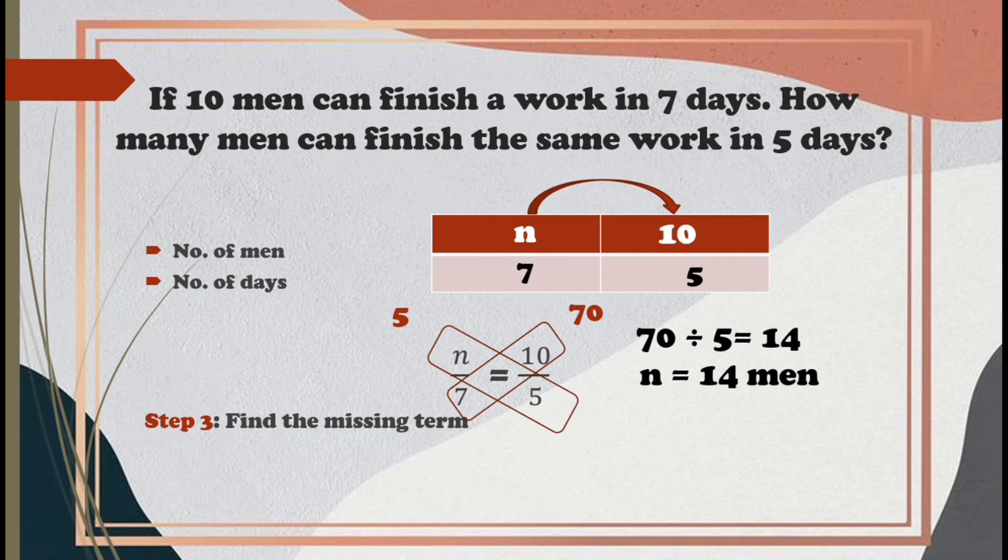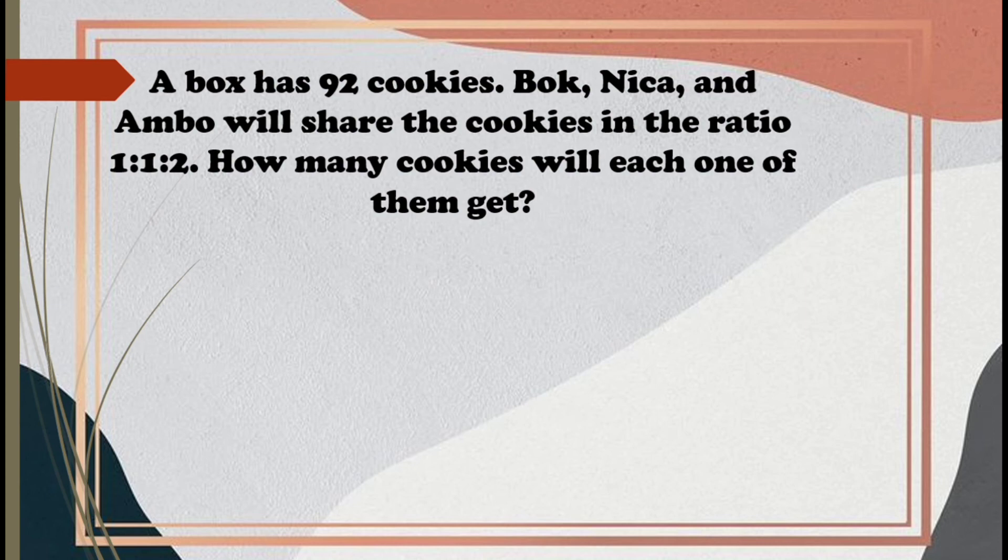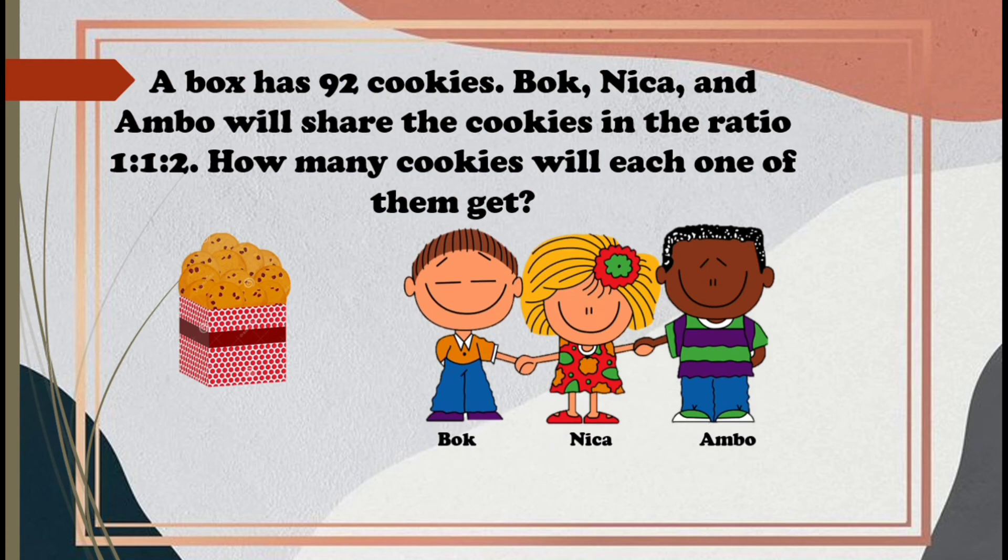Great job! Now, let's go to our next and final problem. A box has 92 cookies. Bok, Nika, and Ambo will share the cookies in the ratio of 1 is to 1 is to 2. How many cookies will each one of them get? Here, in the problem, we need to divide 92 cookies into Bok, Nika, and Ambo considering the given ratio. This is an example of a partitive proportion.